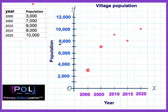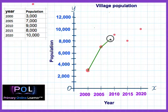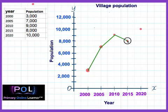Once you have done that, you use a ruler to draw the lines. We start joining from one point to the next, drawing the lines independently. Make sure your lines are accurate. So this is our line graph.